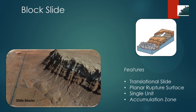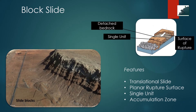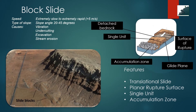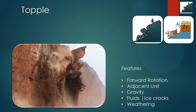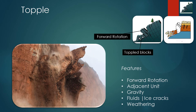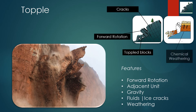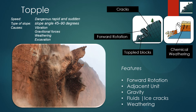A block slide is a translational slide in which the moving mass consists of a single unit or a few closely related units that move downslope as a relatively coherent mass. Toppling failures are distinguished by the forward rotation of a unit or units about some pivotal point below or low in the unit, under the actions of gravity and forces exerted by adjacent units or by fluids in cracks. The speed of topples is extremely slow to extremely rapid, on slope angles of 45 to 90 degrees. Causes include differential weathering, freezing and water, vibration, undercutting, excavation or stream erosion.